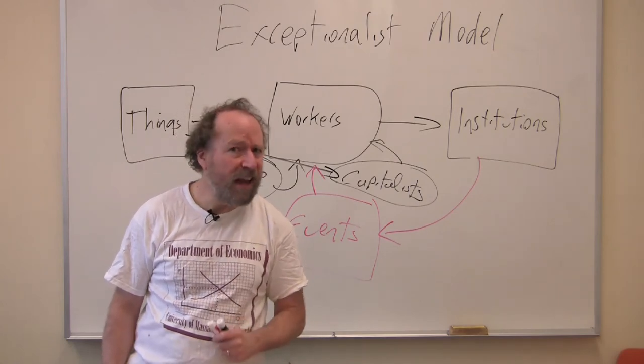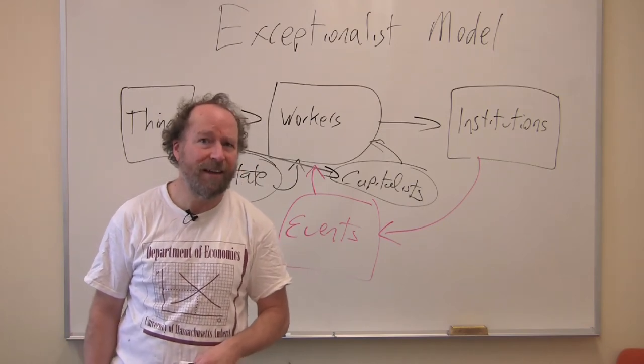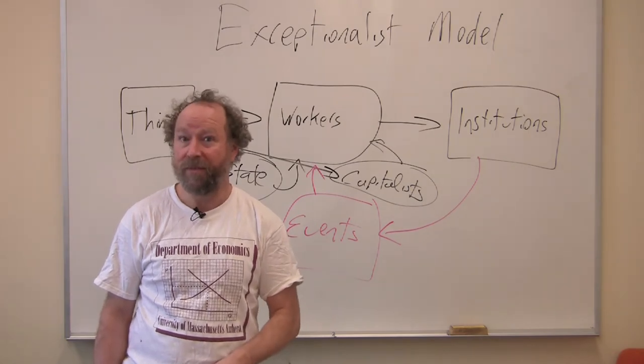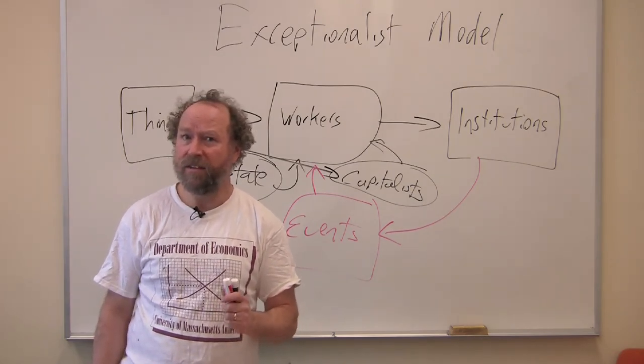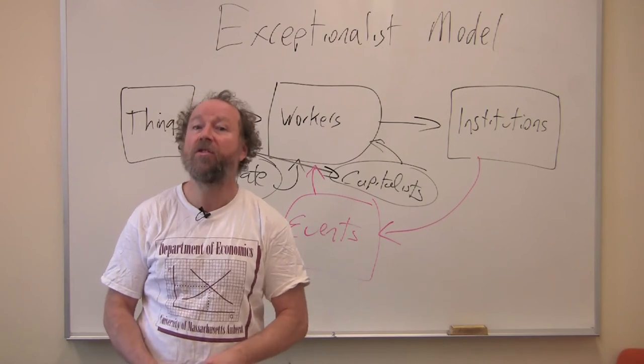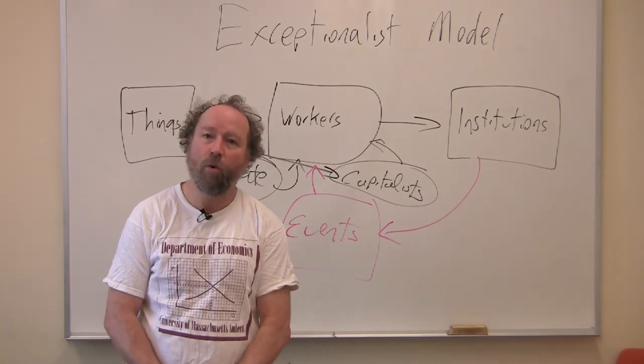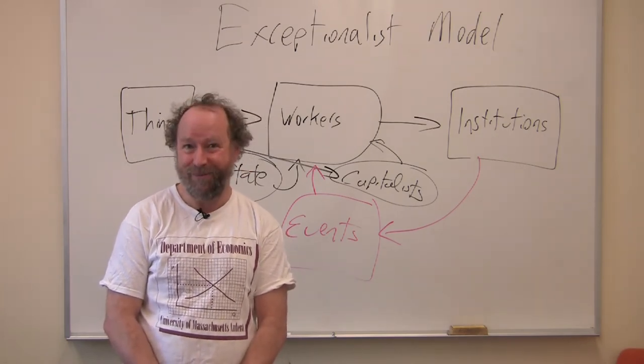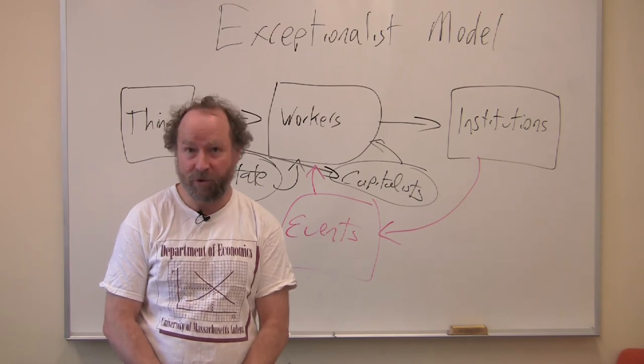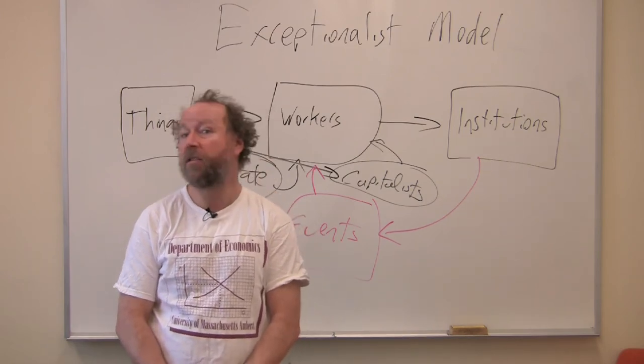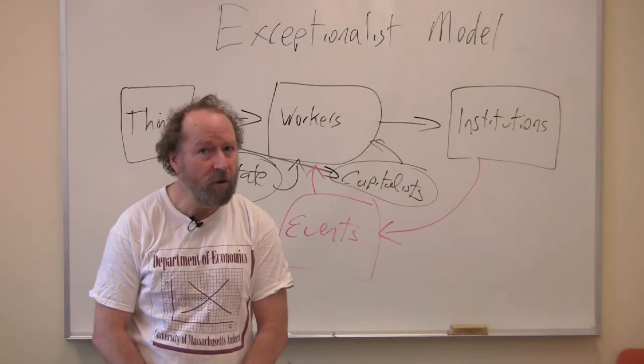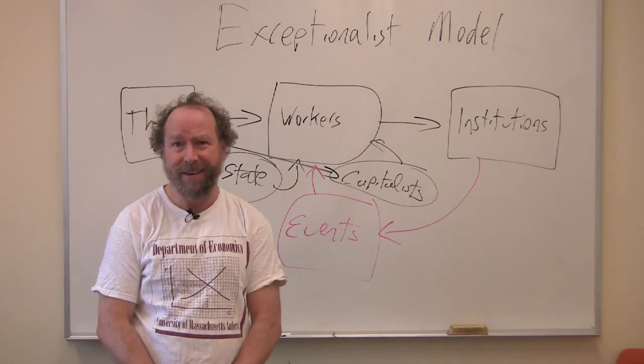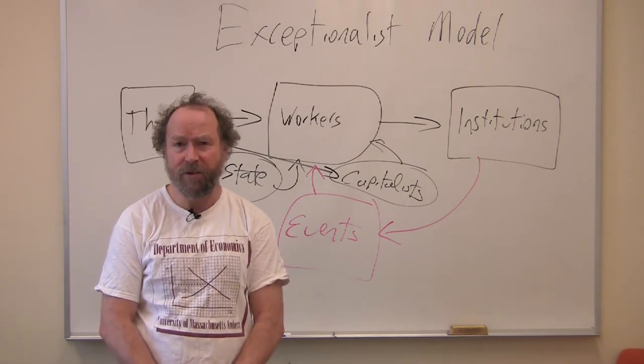There's no comparable data set for how often state officials intervened in the United States, but when they did, it's pretty clear workers lost. Workers in the United States, unions did not benefit from state intervention, so they tried to avoid it. They kept their strikes small. They avoided radical rhetoric. They kept quiet. They became exceptional. French workers and their unions became exceptional in their own way because they had exceptional opportunities to influence the state because of the divisions within the elites.